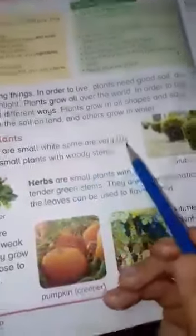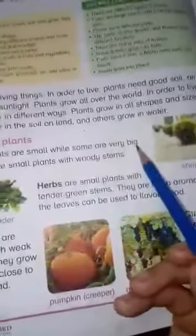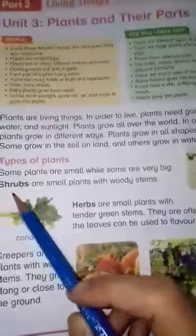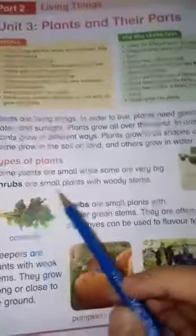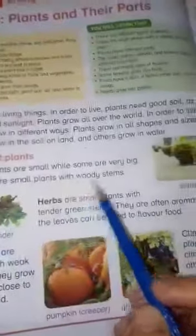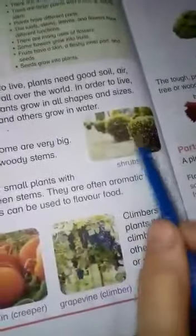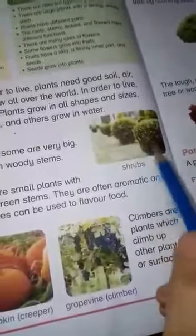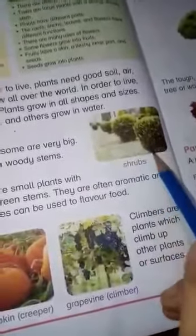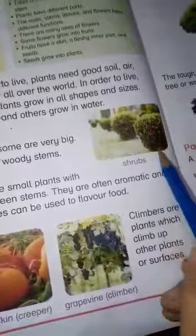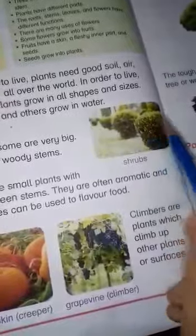Some plants are small while some are very big. Shrubs are small plants with woody stems. They have a small woody stem and are quite small in size.